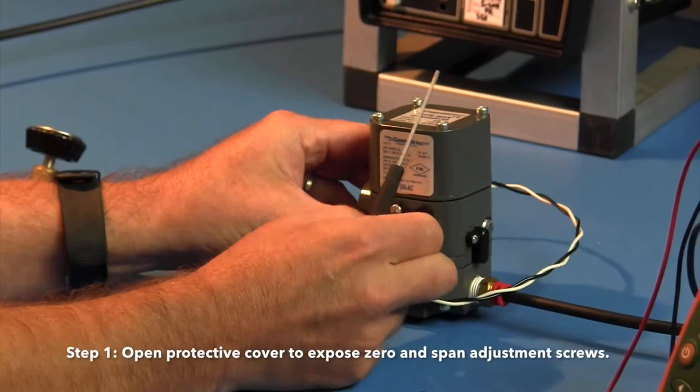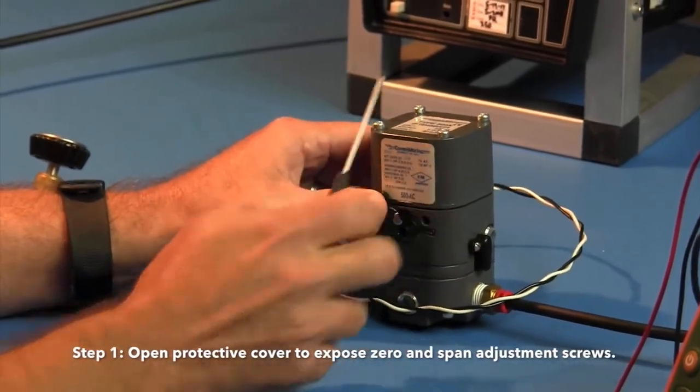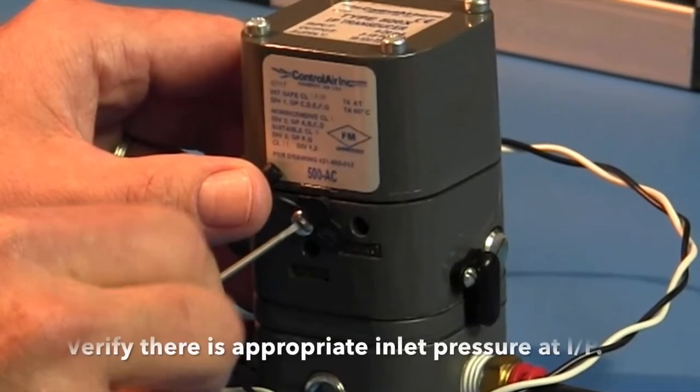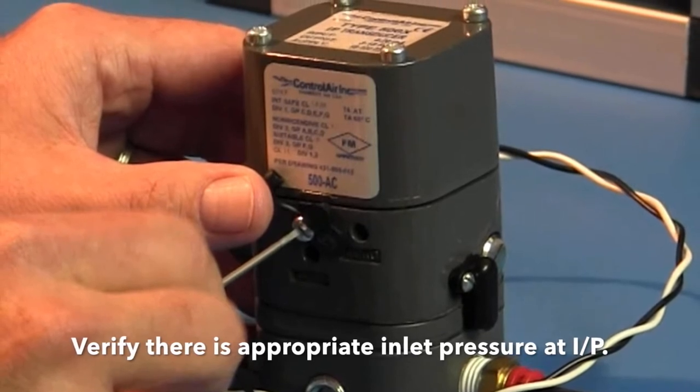Step 1. Open protective covers to expose zero and span adjustment screws. Verify there is appropriate inlet pressure at I to P.